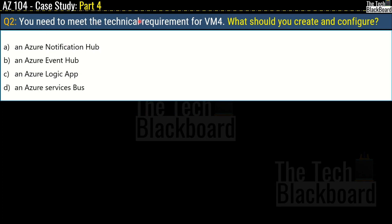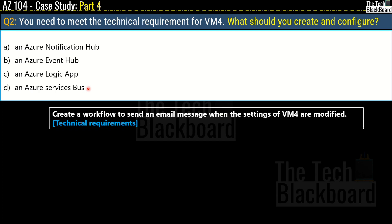Question 2: You need to meet the technical requirements for VM4. What should you create and configure? Options are: Azure Notification Hub; Azure Event Hub; Azure Logic App; or Azure Service Bus. The relevant technical requirement is to create a workflow to send an email message when the settings of VM4 are modified. The correct answers are option B, Azure Event Hub, and option C, Azure Logic App.